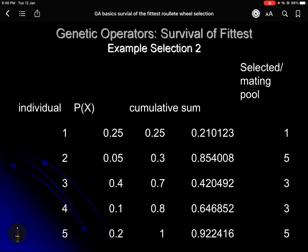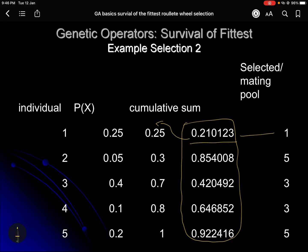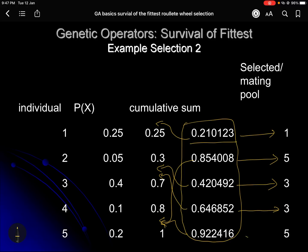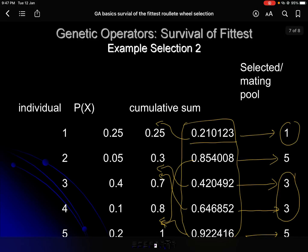Here is a second example with a new set of random numbers. 0.85 lies in the range for individual 5, so 5 is selected. 0.42 lies in individual 3's range, so 3 is selected. 0.64 again maps to individual 3, and 0.92 maps to individual 5. The individual with the highest probability — individual 3 with 0.40 — tends to be selected more often, though randomness means results vary.